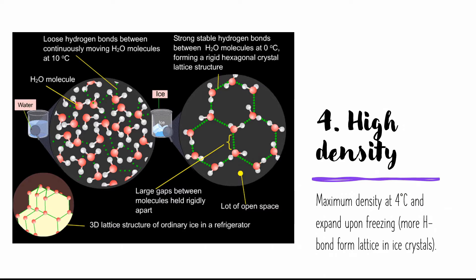The next property is the high density of water. Water molecules are at maximum density at 4 degrees Celsius, where kinetic energy is low and hydrogen bonds are less likely to break and reform. When water molecules reach 0 degrees Celsius, the water expands and forms a crystalline lattice structure with large gaps between the molecules. So when water freezes at 0 degrees Celsius, it is at its lowest density — that's why ice floats on water.